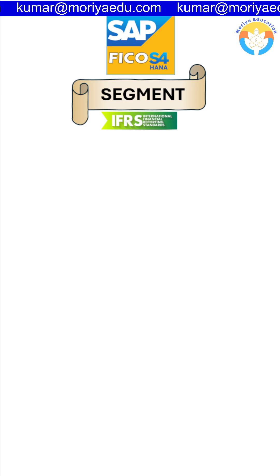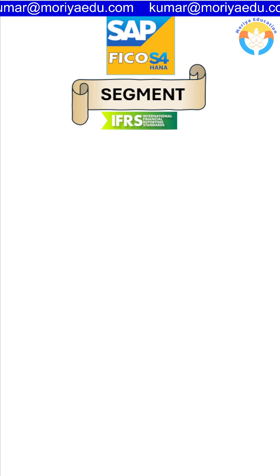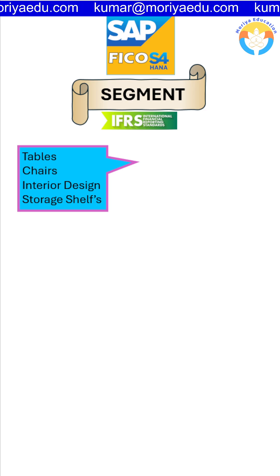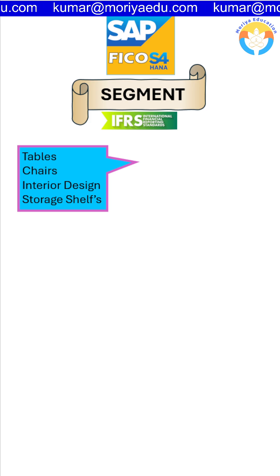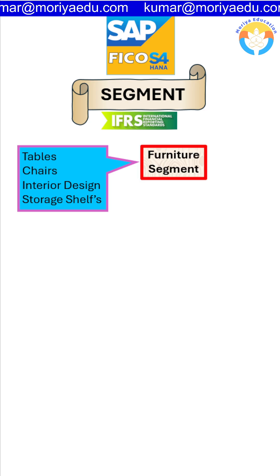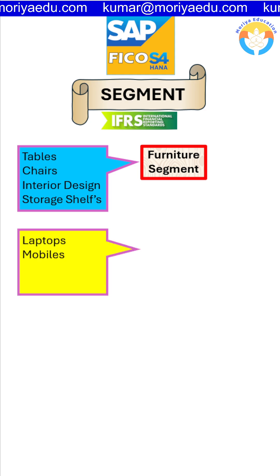For example, we have tables, chairs, interior design, and storage shelves — these are all wooden products which belong to furniture. So we will create a segment named 'Furniture'.